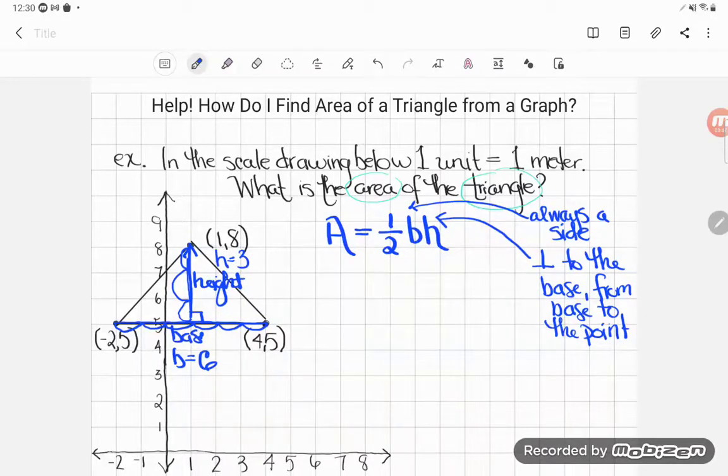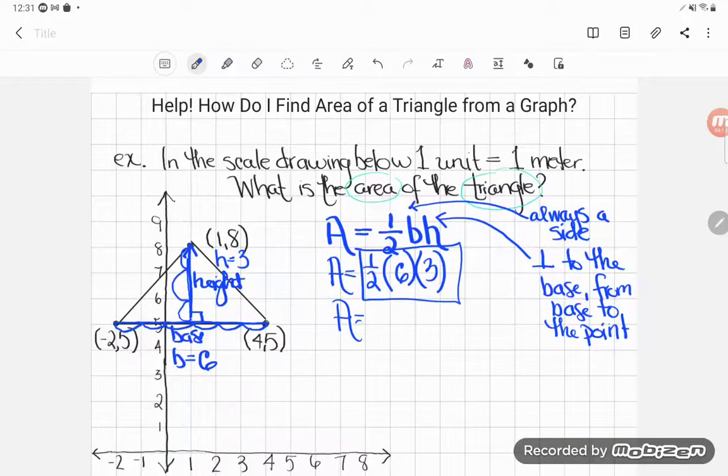Now I can plug those numbers into my formula. And it's easy as can be. So A equals one half times the base, which was six, times the height. When things are shoved together, they're multiplying. So I times that by three. You can simplify this by hand or use your TI calculator. A half of six is three, and if I multiply three by three, I get just nine.